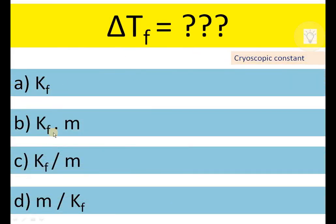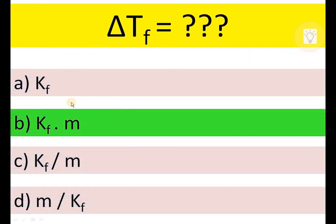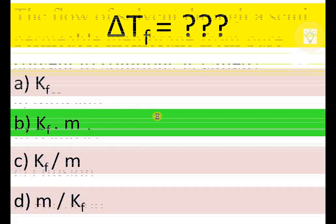ΔTf equals Kf × M, Kf / M, or M / Kf. Where Kf is the cryoscopic constant, the correct answer is B — Kf × M (Kf into molality).